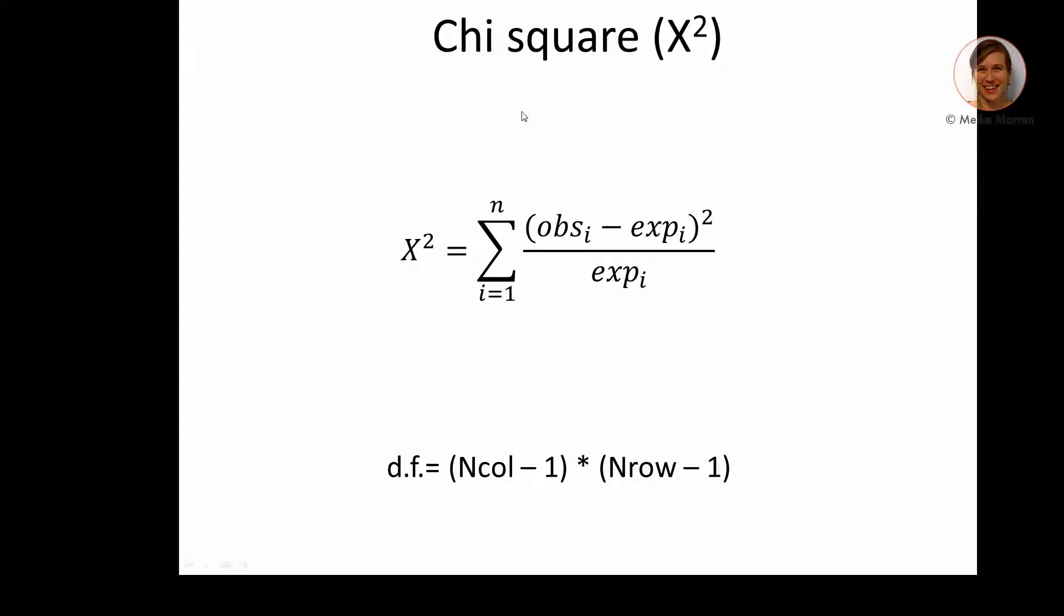We go back to the formula. Here you will see that actually these differences between the observed and expected frequencies for each cell. Those are squared and divided by the expected frequencies. These numbers are summed across for each cell, and together this becomes the chi-square value. The degrees of freedom depend on how large your table is. So you multiply the number of columns minus one times the number of rows minus one.